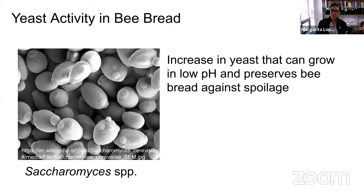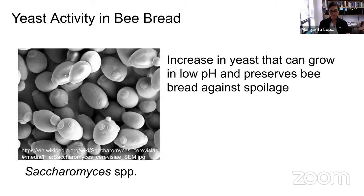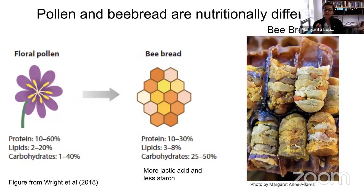The bacteria present in the first step lower the pH, which is the perfect environment for yeast to continue growing and finish the fermentation. At this point, after the bacterial fermentation, when the yeast start growing, the total bacterial activity in the bee bread decreases. The bee bread becomes dominated by these beneficial yeast, which in some ways preserve the bee bread and stop pathogenic yeast or bad yeast from growing and spoiling it.